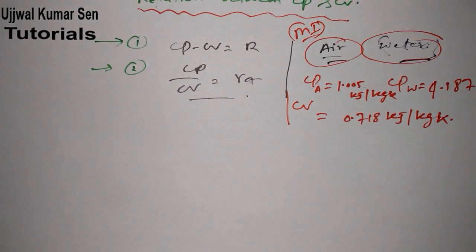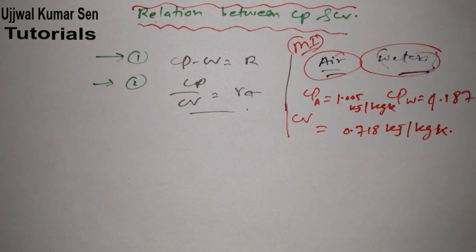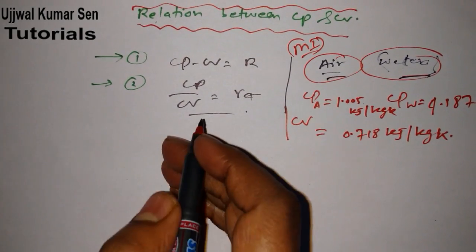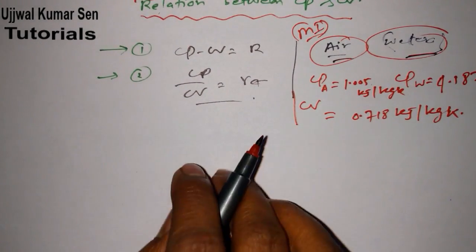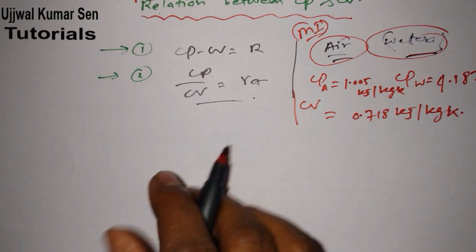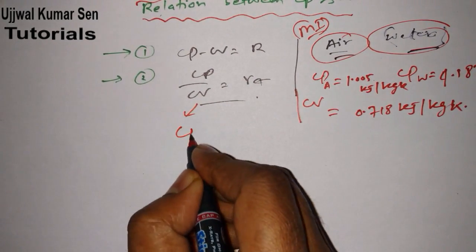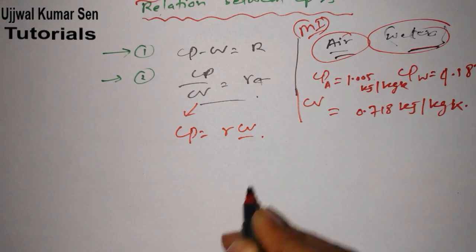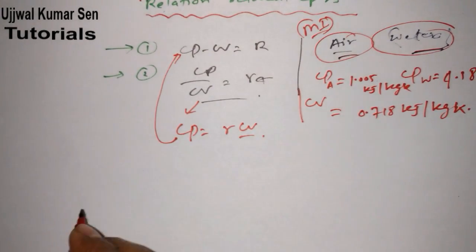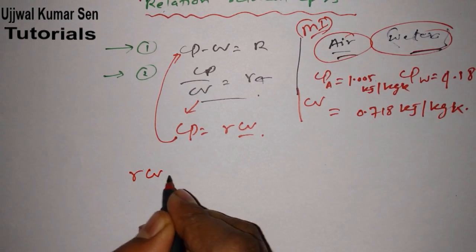Now let's go for the relation between CP and CV, for what you are watching this video. So what is basically CP and CV from here? What we can write is CP is equal to gamma CV. Now put this CP value here.